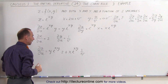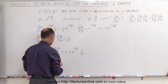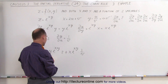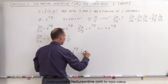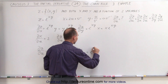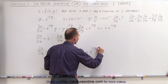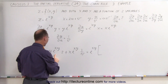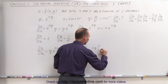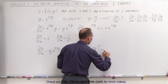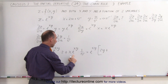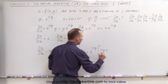If we simplify that, we can factor out e^(xy), so this equals e^(xy) times the quantity: on the left side we have 2y, plus on the right side x divided by v.